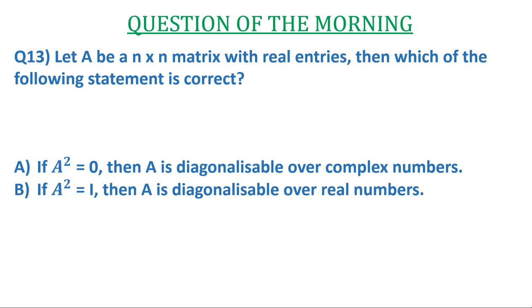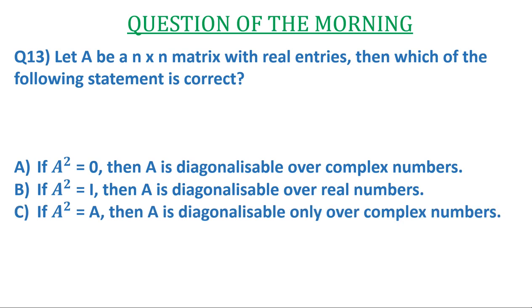Option B: If A² = I, then A is diagonalizable over real numbers. Option C: If A² = A, then A is diagonalizable only over complex numbers. And D: None of the above. So let us solve the question.